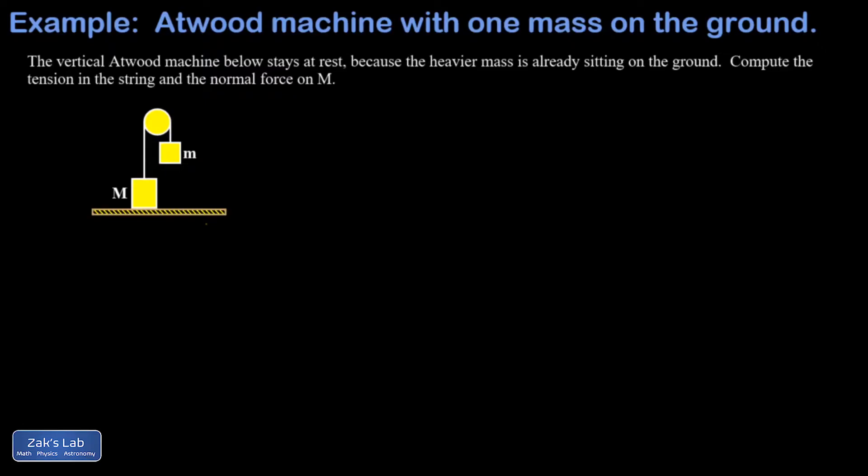start by just doing some force diagrams. Gravity is certainly pulling down on the little mass mg, and there's another force on m. The reason it's not falling is that the tension is pulling up on it. I tried to show those two forces sort of qualitatively equal in magnitude because I know the net force on little m is zero because it's not accelerating.